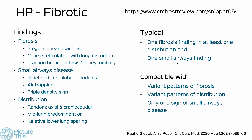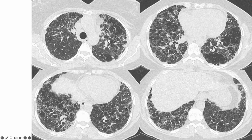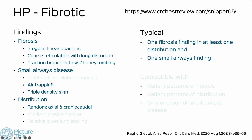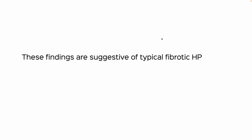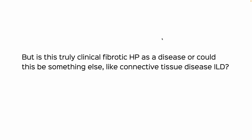Looking at the 2020 criteria for hypersensitivity pneumonitis, a diagnosis of typical fibrotic HP requires fibrosis in any of these distributions plus one finding of small airways disease. We can see the triple density sign — lucent lung, ground glass, normal lung — as well as widespread areas of air trapping, suggesting a small airways component. This gives classic findings of typical fibrotic hypersensitivity pneumonitis.